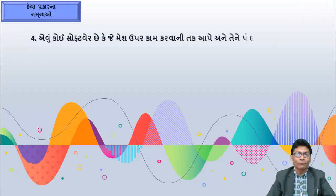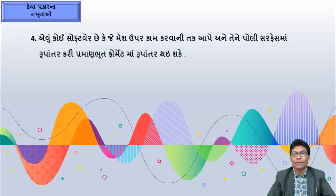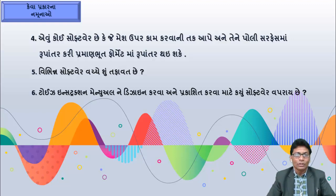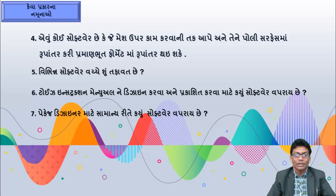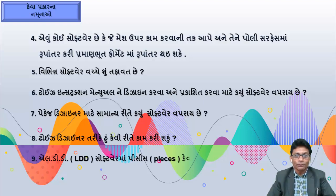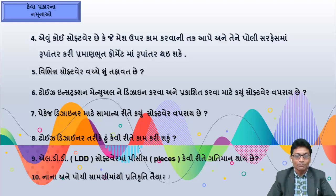Number 4: Dibu - what software is available that gives you the opportunity to work on images and convert them into poly surface format, or into book format? Number 5: What software is available for various sound textures? Number 6: What software is available for toys? Number 7: What software is available for designing and publishing toys instruction manuals? Number 8: What software is generally used for package design? Number 9: How can a toys designer work effectively?